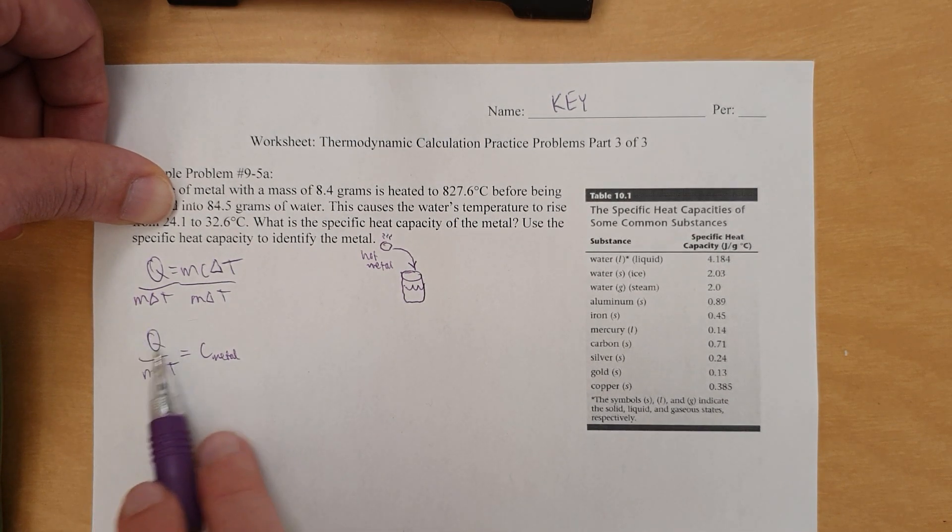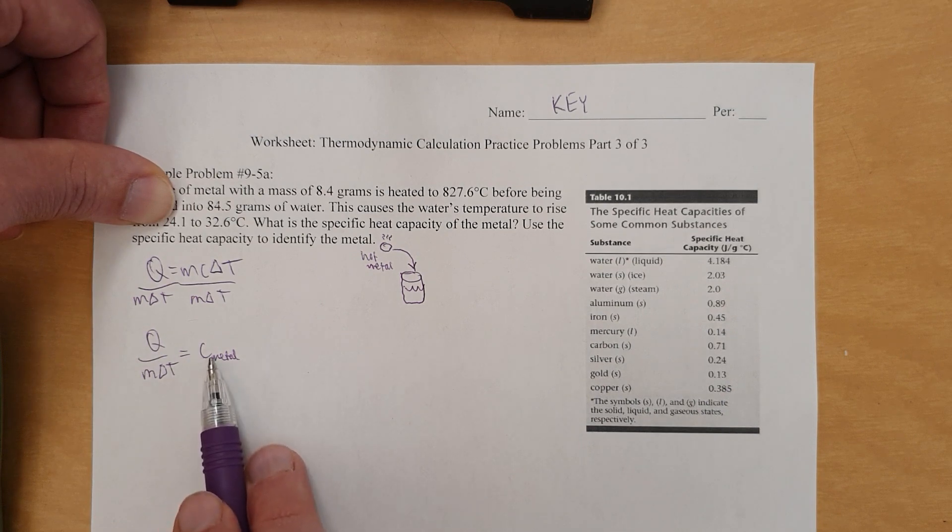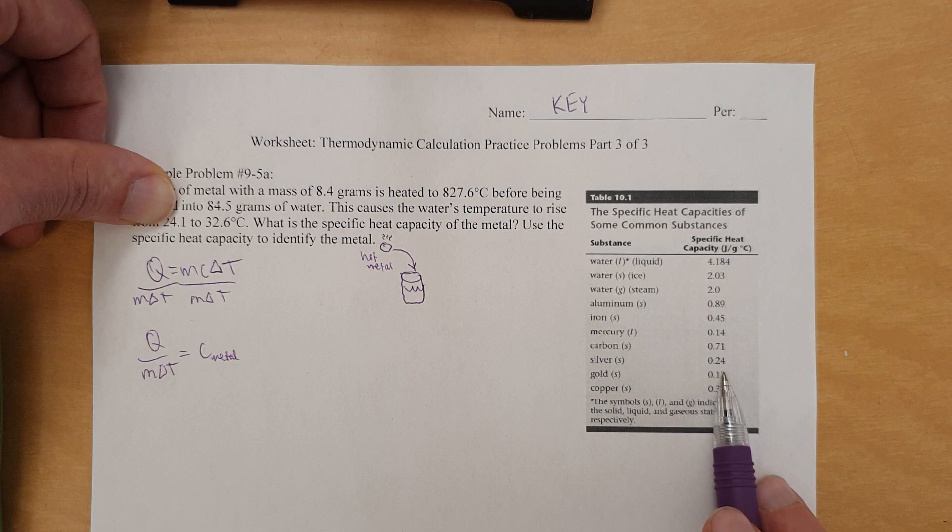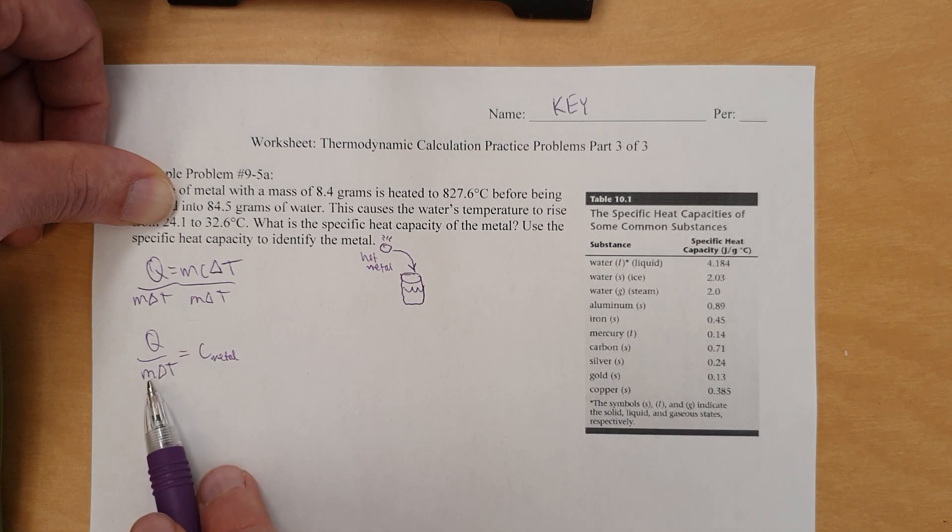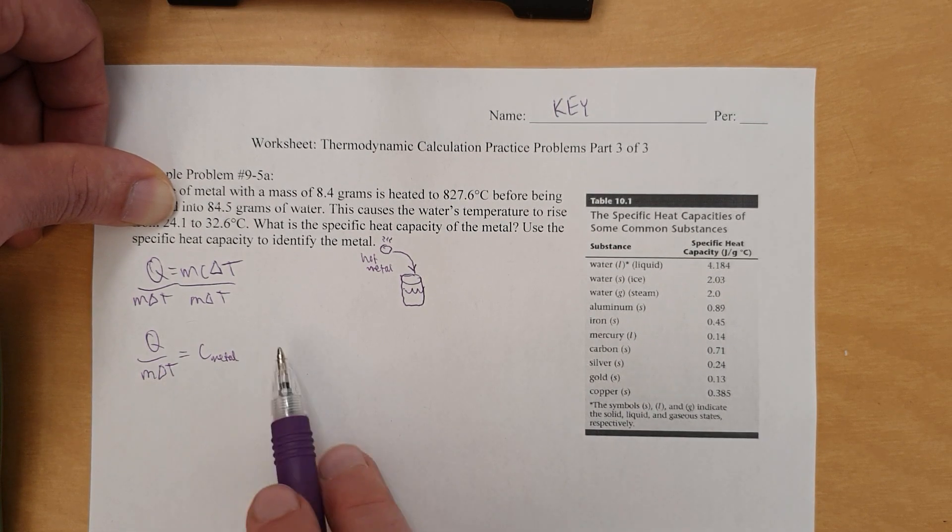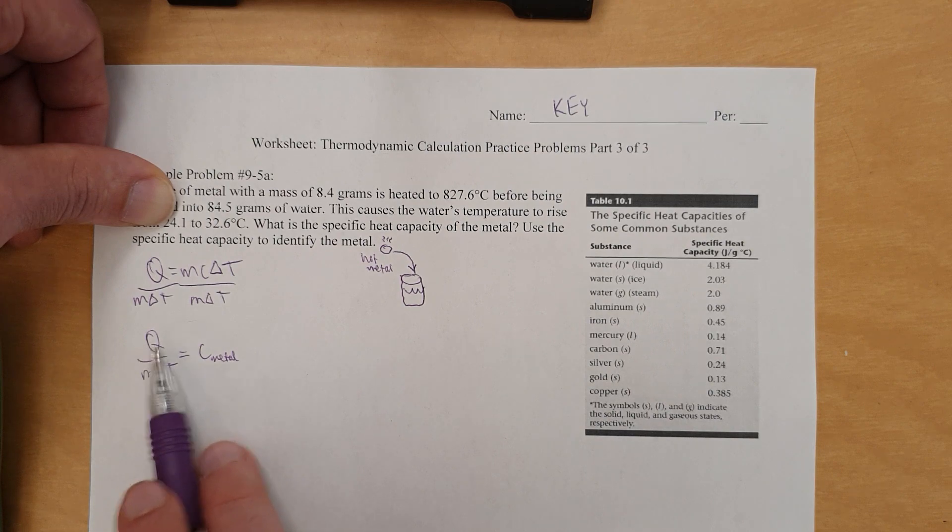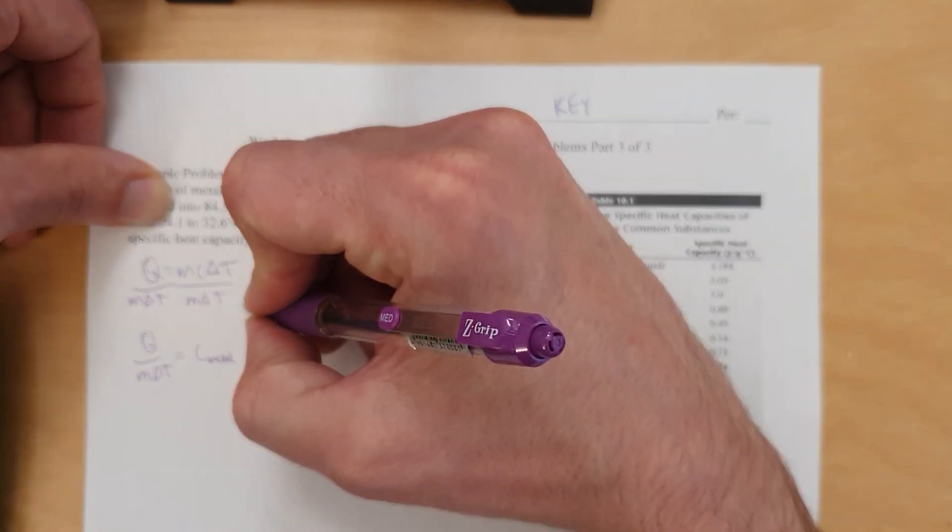We still need to figure out Q, and we'll come back to that in a sec. But our strategy is we're going to identify the specific heat capacity of the metal, and then look at the chart and match the specific heat capacity to an identity. So before we can go any further that we have the mass, we can figure out the metal's delta T. We got that right now.